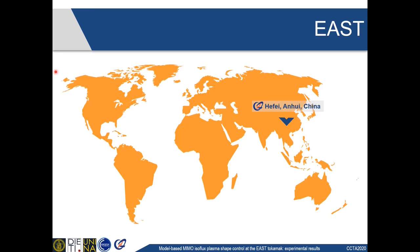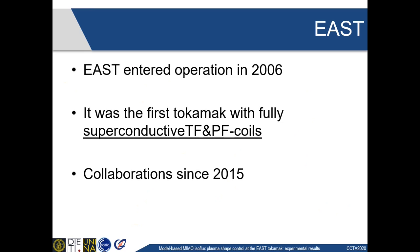The results that will be presented here were obtained at the end of 2019 at the EAST Tokamak, which is a site in Hefei, in the Anhui province of China. EAST entered operation about 15 years ago, in 2006, as the first tokamak with fully superconducting toroidal and poloidal field coils. As CREATE, we've had the pleasure of collaborating with the EAST team since 2015 on the topics of plasma scenario optimization and magnetic control, and more recently on plasma equilibrium reconstruction.